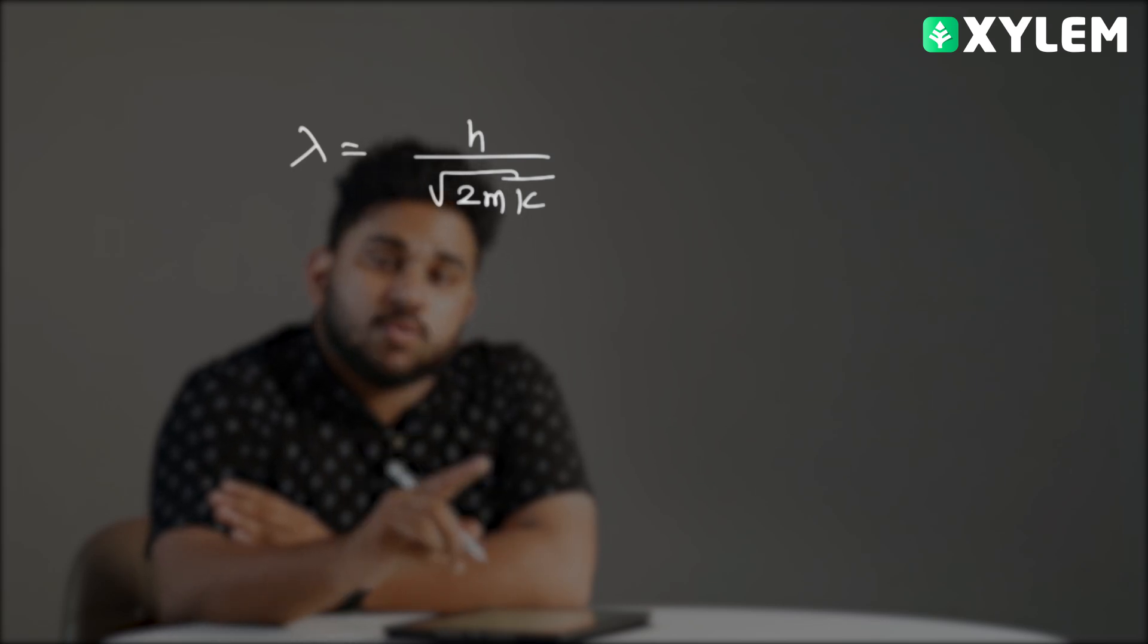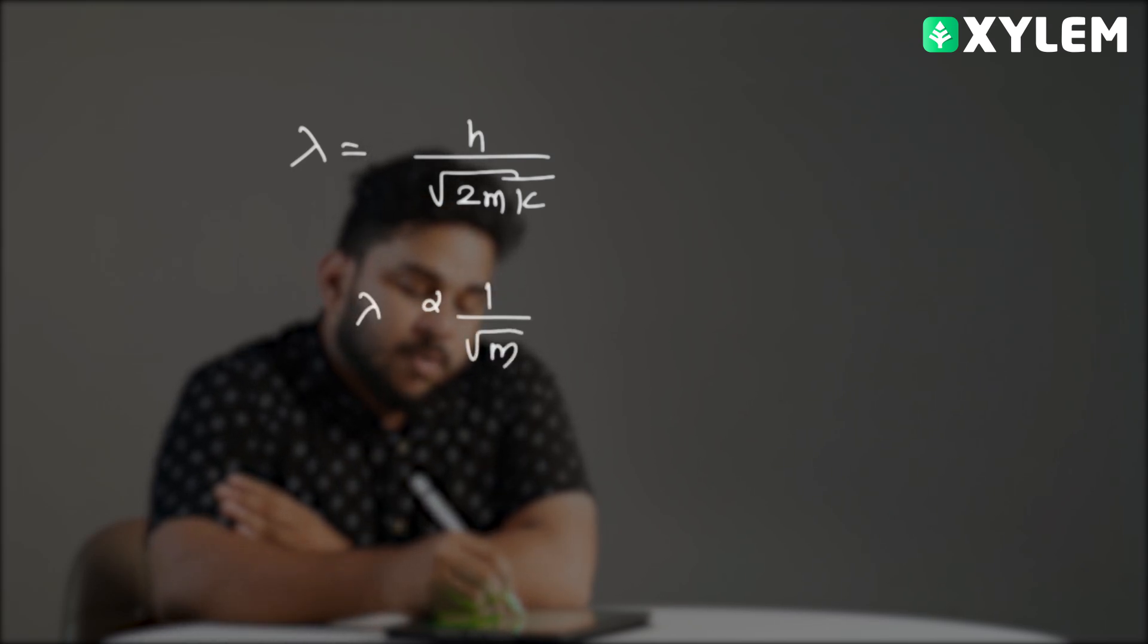We know that lambda equals h divided by root of 2mk, where k is constant. So lambda is inversely proportional to 1 by root m.